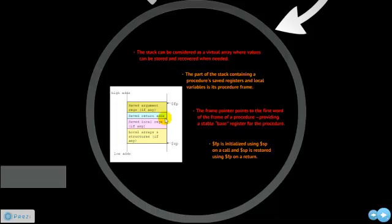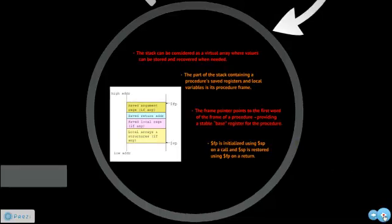What this basically means is that this part of the stack contains the procedure's saved registers and local variables. As I said before, the stack goes from the high address to the low address, so it pushes data from top to bottom and pops data from bottom to top. When the procedure starts, if the stack pointer is at this position, once the procedure is over, the stack pointer should be restored to this position. You will better understand this when we move to the example.